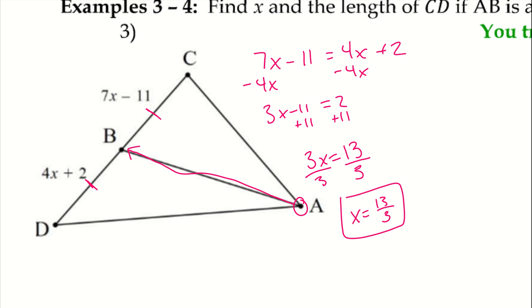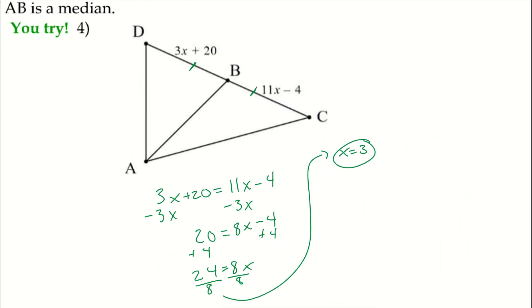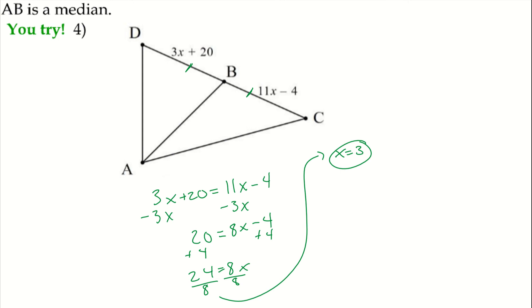Go ahead and try number 4, take a second, pause the video. Here's the work for number 4. So once again we have that median that starts at A and goes all the way down until it hits DC. And so therefore B is our midpoint and it cuts DC into 2 halves.